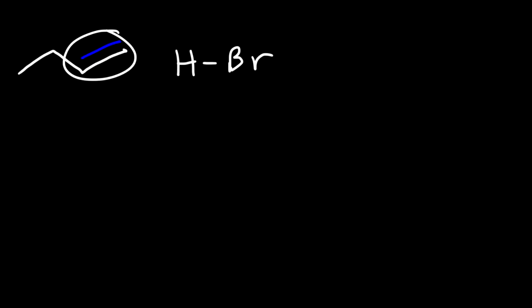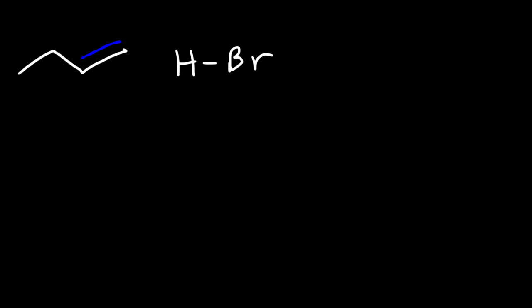The double bond is nucleophilic — it's electron rich — and so it's going to be attracted to the hydrogen atom, because the hydrogen atom bears a partial positive charge and the bromine atom bears a partial negative charge. So the double bond is going to react with the hydrogen, and the bond between H and Br is going to break.